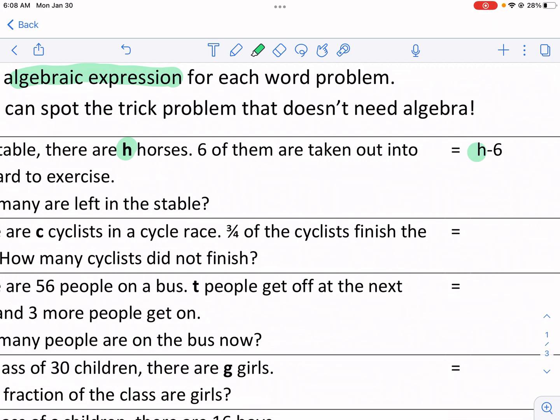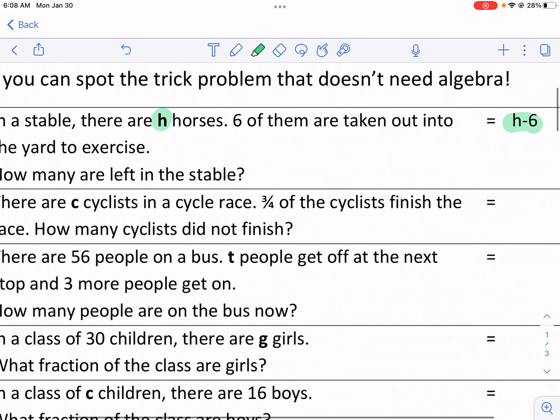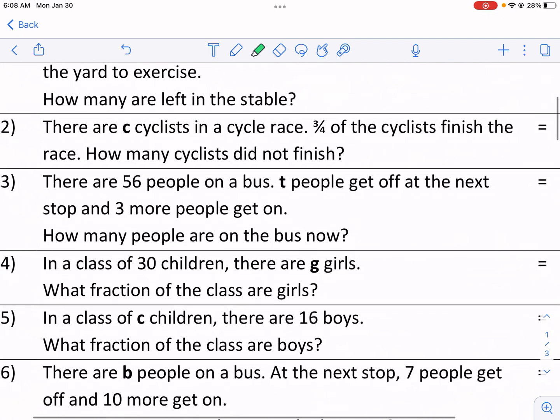So you see that we do h minus 6. The unknown amount, the question mark essentially, minus 6 that were taken out, that's how many are left in the stable. So we're just writing an expression just like this example. So let's go ahead to number 2.